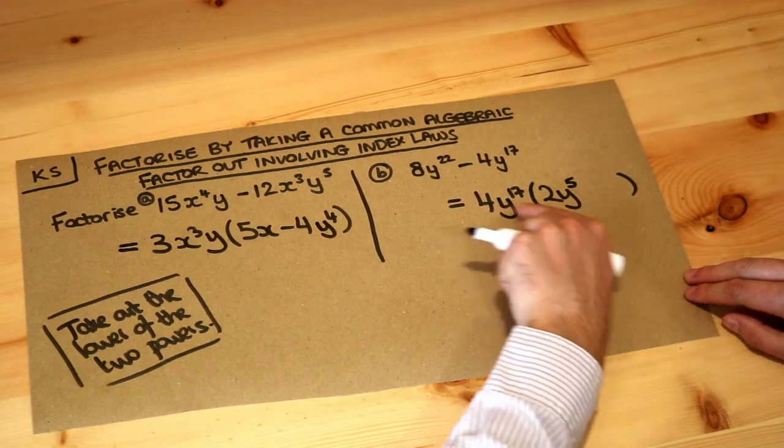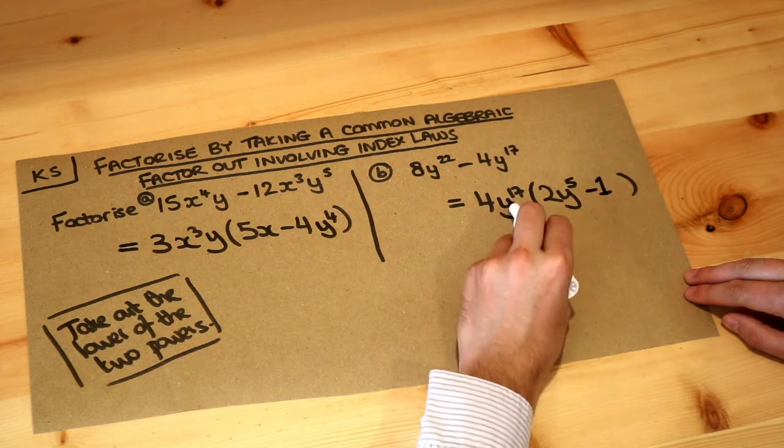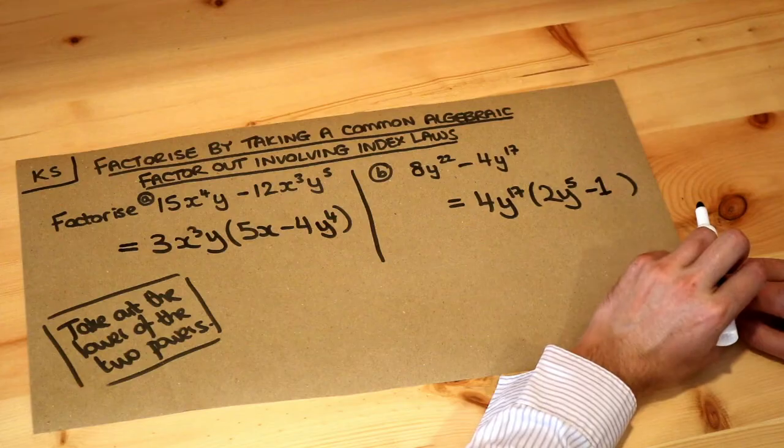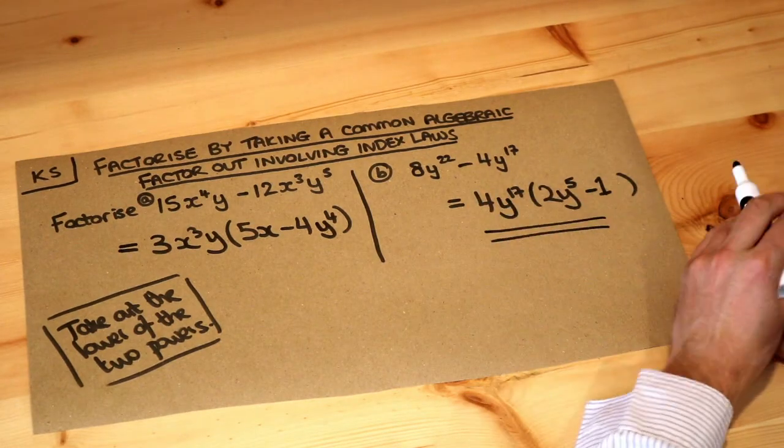And then finally the second term: 4 times what is minus 4? Which is minus 1. And y to 17 times what is y to the 17? We don't need to times by anything there, so that in fact is the final answer.